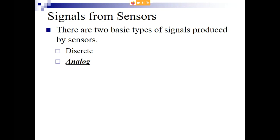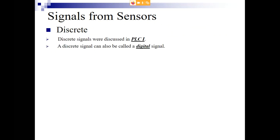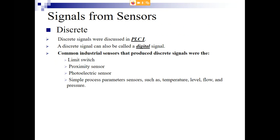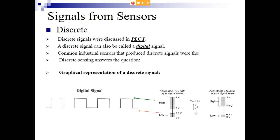We can also control something with a motor — control the speed — and that would be an analog control. This class focuses primarily on analog. The PLC 1 class spent the majority of its time focused on discrete control, discrete inputs, and discrete outputs. This class is focusing on analog. With a digital signal, it's either a high or a low — an on or off — which we call a zero or a one.